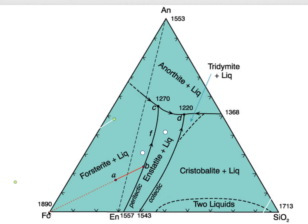Down here, we have a peritectic relationship. You'll want to look back at our video on the system forsterite plus silica and the peritectic relationship — the peritectic melting of enstatite, as enstatite melts to form forsterite plus a silica-rich liquid.